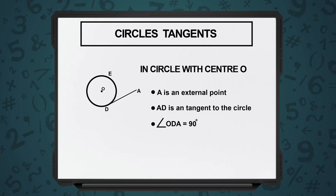Tangent has a very specific property. We have this tangent, let us say AD, where A is the external point and D is the point where it just touches the circle. The center is O. If we join O and D, OD is nothing but the radius of the circle.